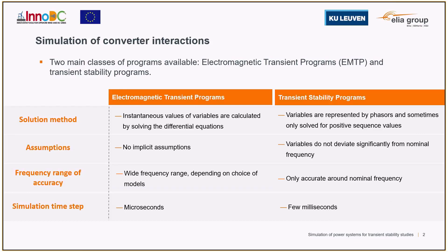Typically, EMTP has been used to study electromagnetic transients, which are located in the high end of the frequency spectrum, while transient stability programs are generally used to study electromechanical transients associated with the behavior of synchronous machines, which tend to be slower in frequency.